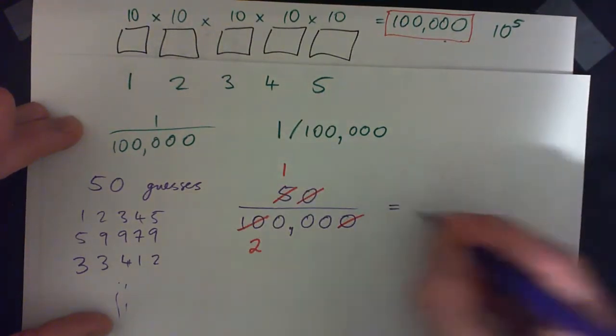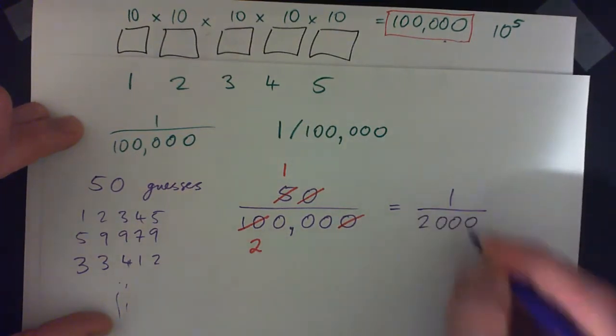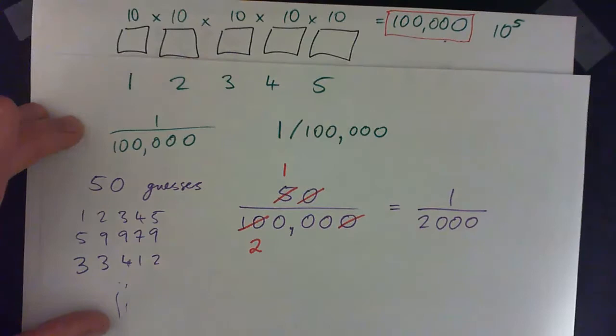And now we have 1 over, and this is 2,0,0,0, 2,0,0,0. What's that number? 2,000. 1 over 2,000.